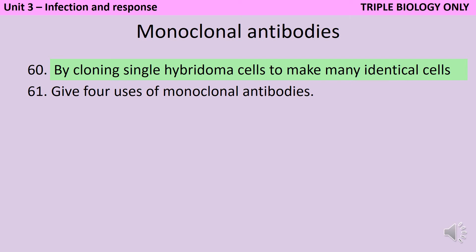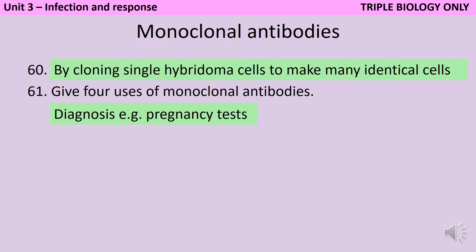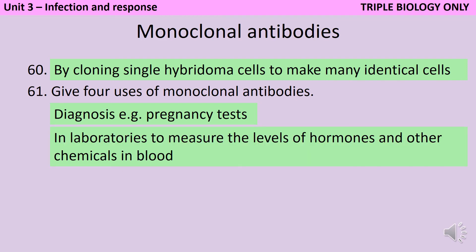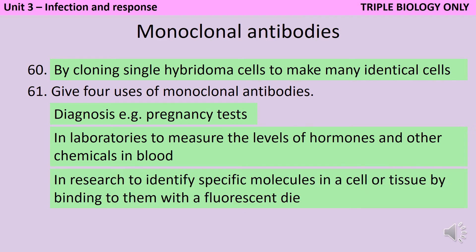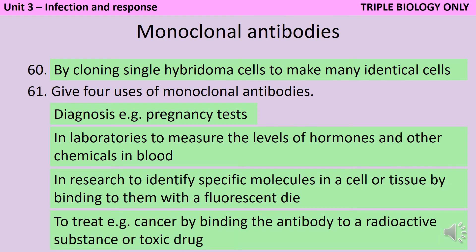These antibodies can be used in diagnosis, for instance in pregnancy tests or in certain lateral flow tests where they're looking for a particular protein, and they can be used in laboratories to measure the levels of a certain hormone or other chemicals in the blood. They can be used to identify a specific molecule within a cell or tissue by binding the monoclonal antibody to a fluorescent dye so that it can be visualized, and they can also be used in some cancer treatments where the antibody may be joined to a radioactive substance or a toxic drug which is then targeted to the tumour cells.